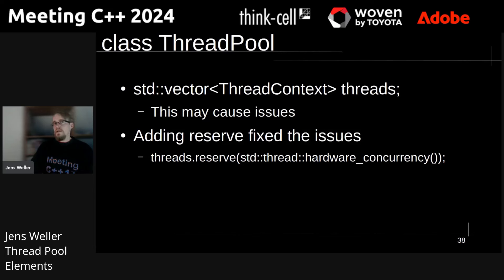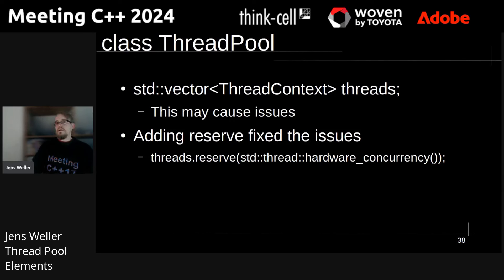I have an internal class called thread_context inside the thread pool. This holds references to many of these shared variables — it has a stop_token from the thread pool, references to the work container, condition variable, mutex, and the working atomic int. It also has a unique_ptr where it actually holds the thread it's executing in. The thread pool holds a vector of these thread_context objects, and this vector has been the source of some of the memory issues I mentioned at the beginning with Compiler Explorer.